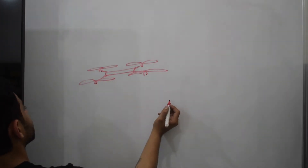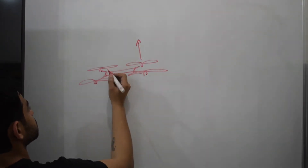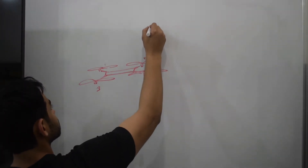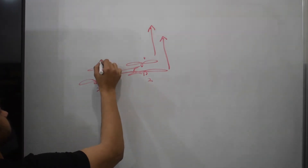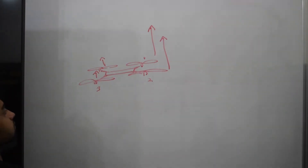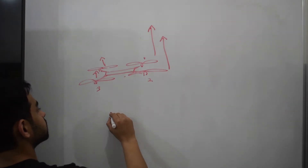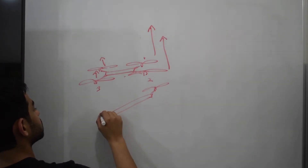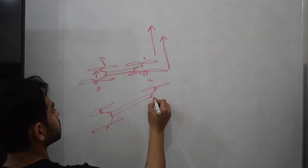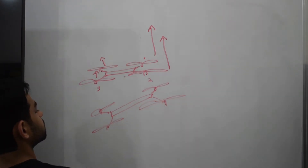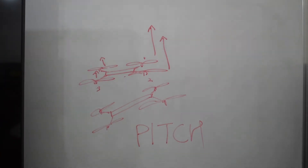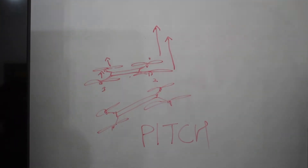Here's a side view of my drone again, facing the left side of the board. When the thrust generated by the rear two motors — which are 2 and 4 — is more than the front two motors — which are 1 and 3 — it causes the rear to lift up higher than the front. This movement is called pitch and enables us to move the drone forwards or backwards.